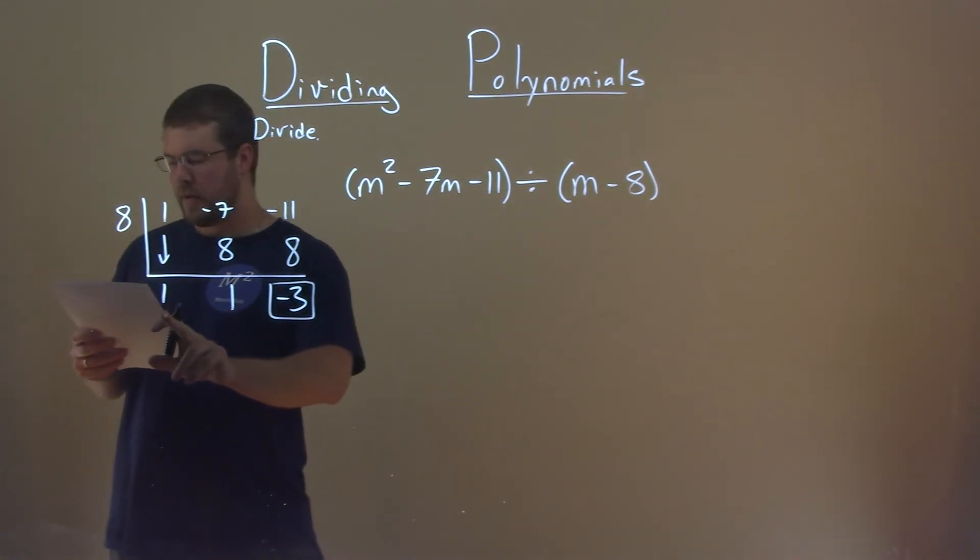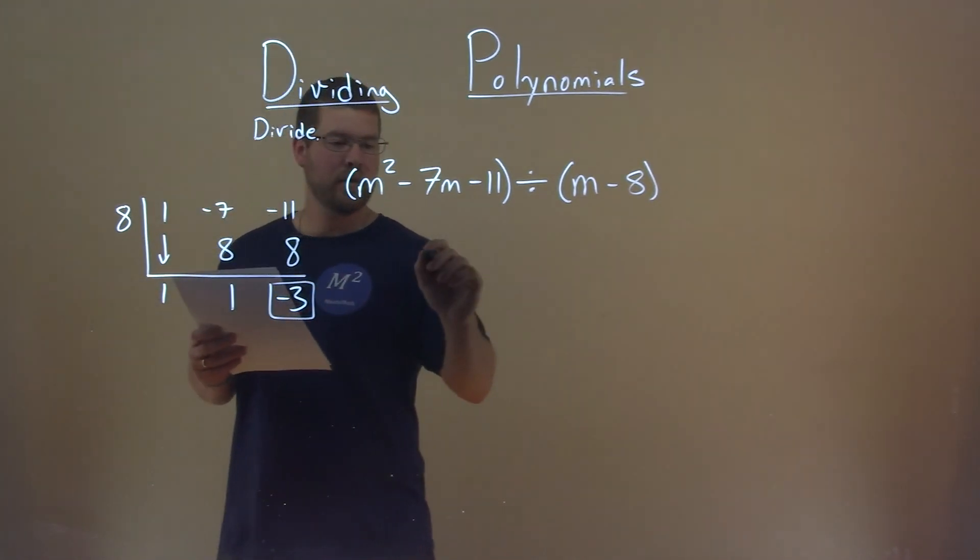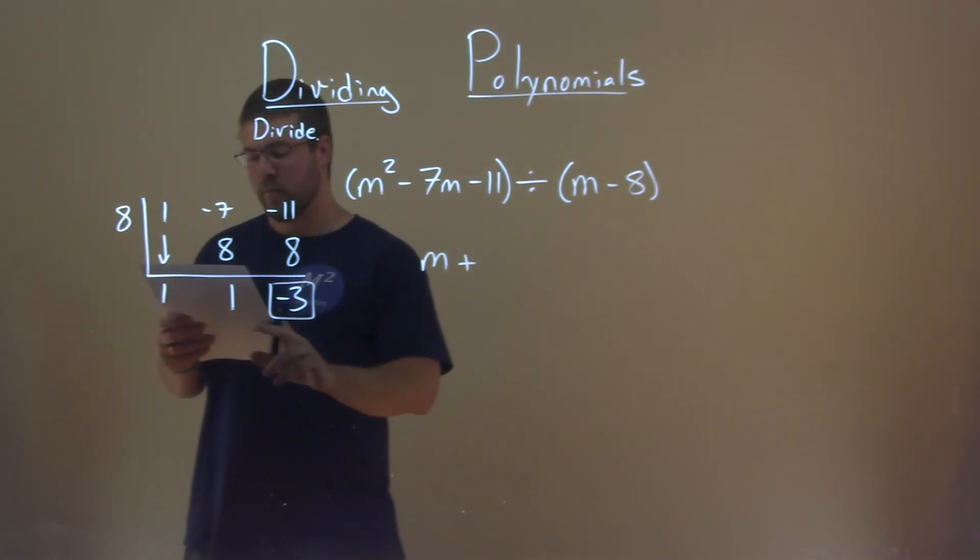So we start with an m here, and we go down the line from there. So the first one is 1m, so we just write m, plus, now we're at the numbers, 1.